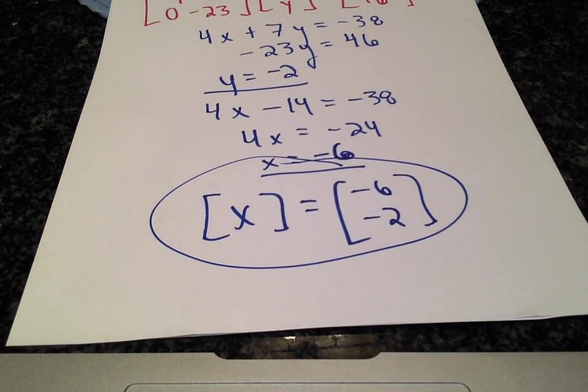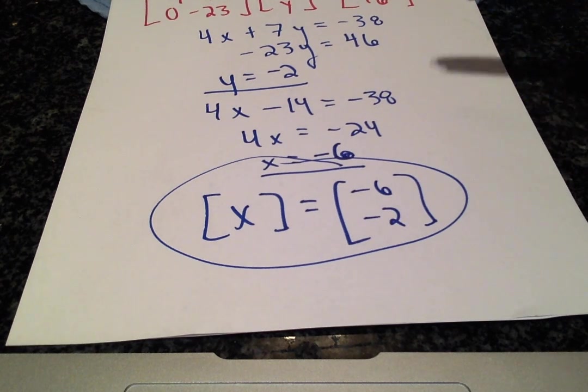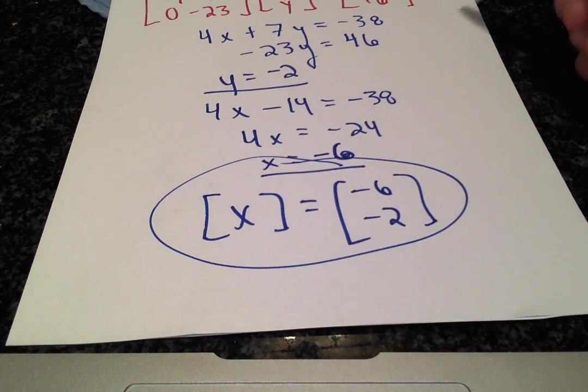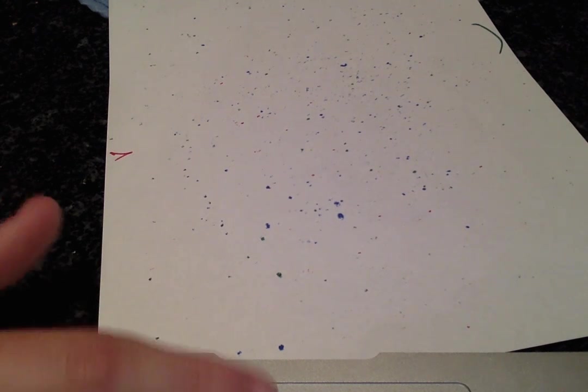We just saw how helpful LU decomposition can be when we're only changing the right hand side of a system of equations, only changing the B vector. I hope this was helpful. Please subscribe to my YouTube channel, and if you have any other video recommendations, please let me know. Thanks for watching.